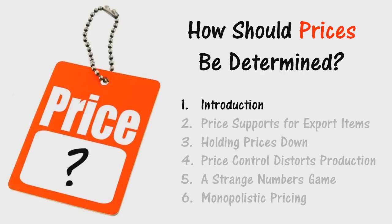In any case, the price will have a definite effect on demand, output, and cost of production, just as these in turn will affect price. All four — demand, supply, cost, and price — are interrelated. A change in one will bring changes in the others, just as the demand, supply, cost, and price of any single commodity are all interrelated, so are the prices of all commodities related to each other.